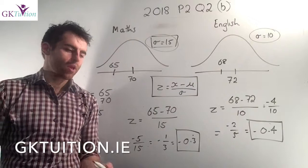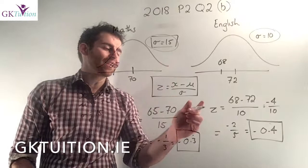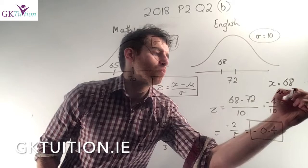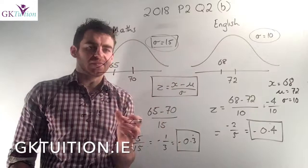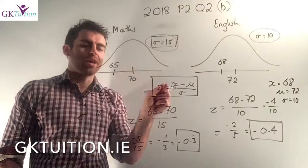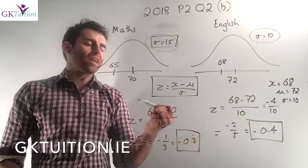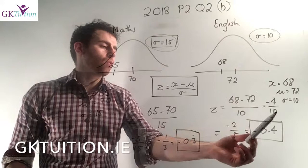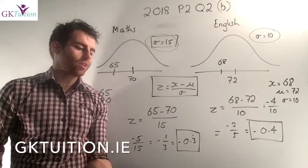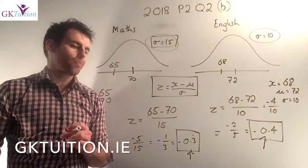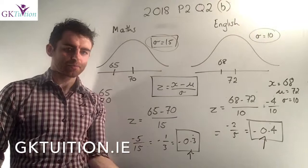Mary's z-score in her maths test was −1/3, which as a decimal is approximately −0.33. In the English test her result was 68, the population mean μ was 72, and the standard deviation was 10. So her z-score for English is (68 − 72) / 10 = −4/10 = −0.4. Clearly her z-score is lower in the English test, which means relative to other students she did worse in English than in maths.